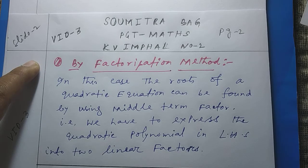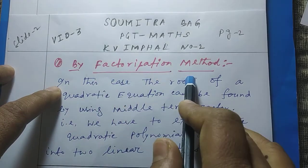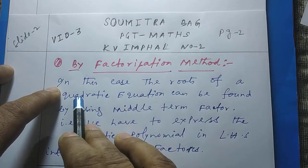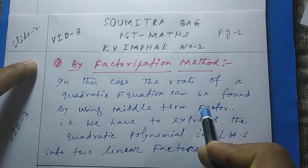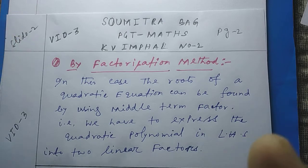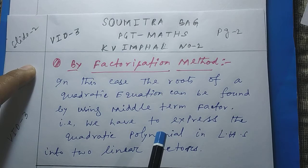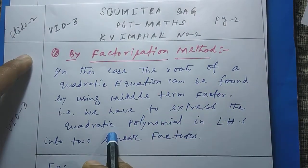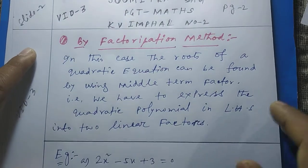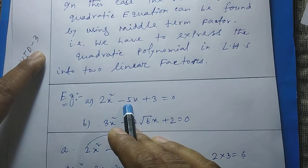Now today in this video we shall be learning the first method — the method of factorization — with a suitable example. In this method the roots of the quadratic equation are found by expressing the quadratic polynomial on the left hand side into two linear factors. After that the values of x, meaning the roots, can be found very easily. It will be clearly understood if we work out one or two examples.